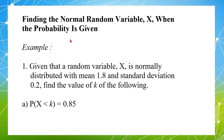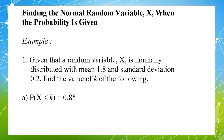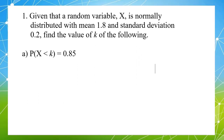In this video, I am going to show you how to find the normal random variable when the probability is given. Now let's go to the question. Given that a random variable X is normally distributed with mean 1.8 and standard deviation 0.2, find the value of k for each of the following.